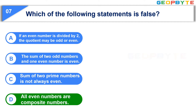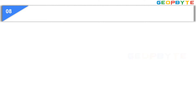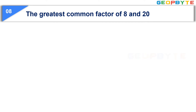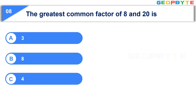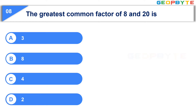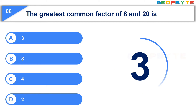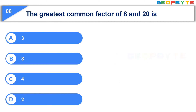The next question is: The greatest common factor of 8 and 20 is — Option A: 3, Option B: 8, Option C: 4, Option D: 2. Your time starts now. Your time is up and the correct answer is Option C, 4.